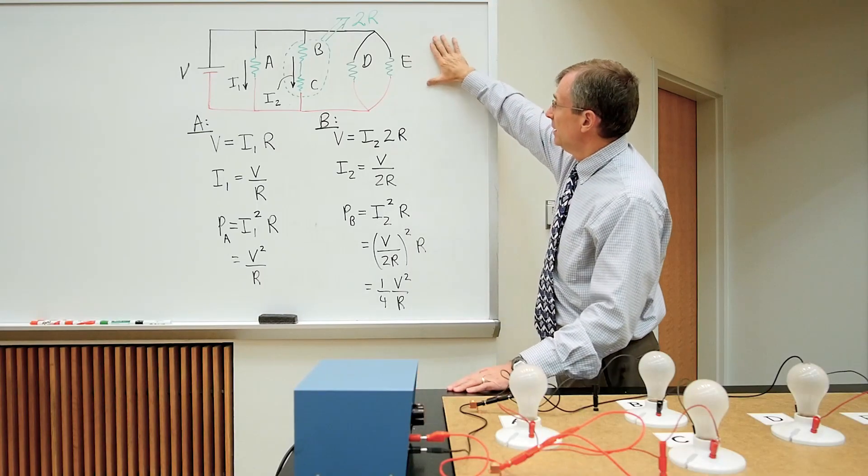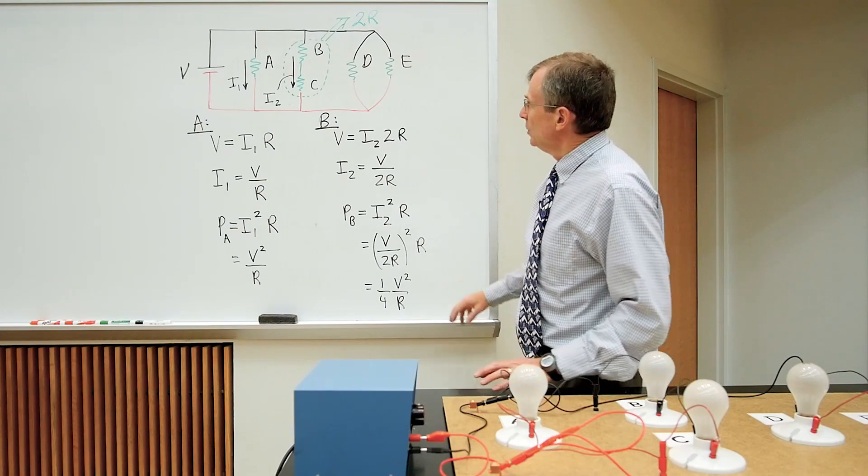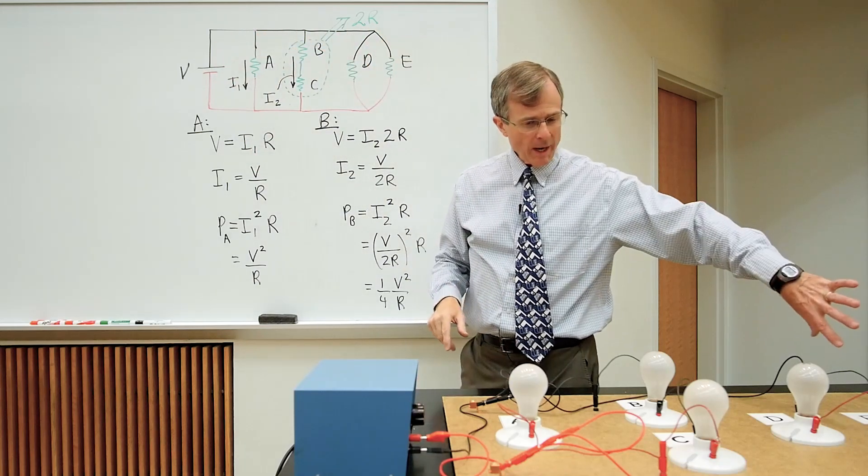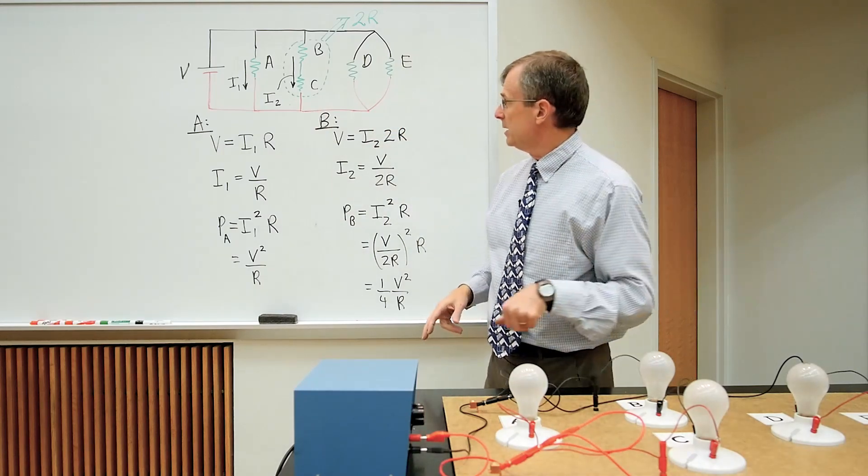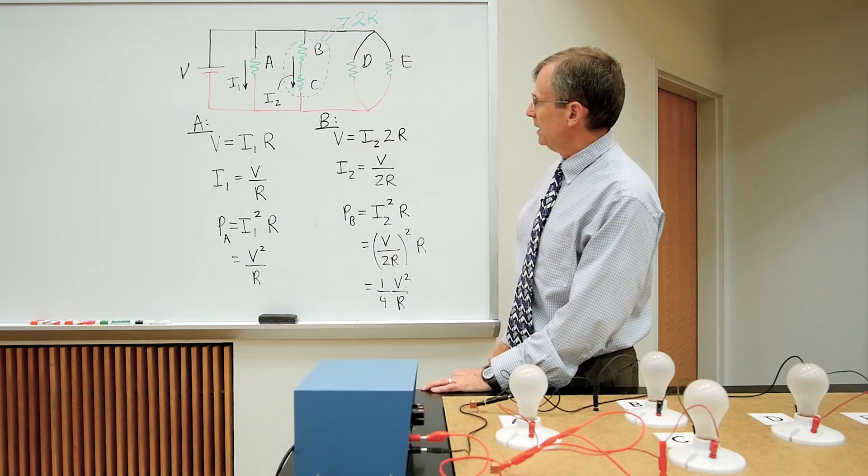Shown here is a diagram of what we have here on the table, with black markings representing all these black wires, the red markings representing all these red wires, and the various resistors denoted in green.